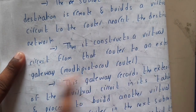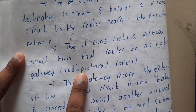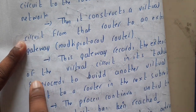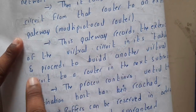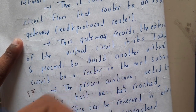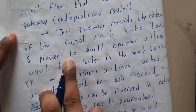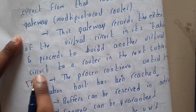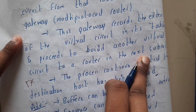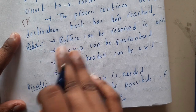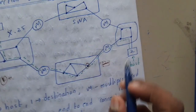It constructs a virtual circuit from the router to the gateway, up to the multi-protocol router. This gateway records the establishment of the virtual circuit in its tables — stored in the multi-protocol routers — and proceeds to build another virtual circuit to the next router in the next subnet. This process continues until the destination is reached, and the packets follow the same path.